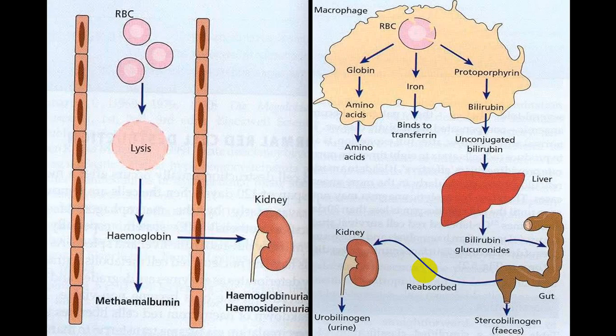When RBC is hemolyzed, hemoglobin is separated out. Hemoglobin will be converted into methyl albumin, and hemoglobin will be filtered at the glomerulus and appear in urine — this is hemoglobinuria. The kidney will also produce hemosiderin pigments which will appear in urine, so in urine you will detect hemoglobin and sometimes even hemosiderin.